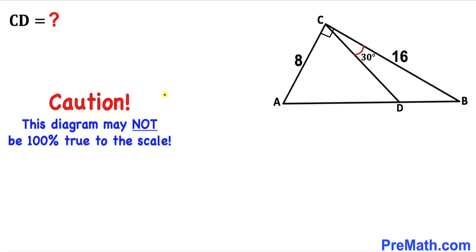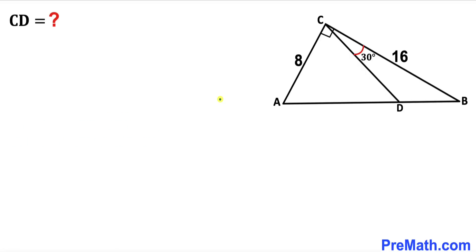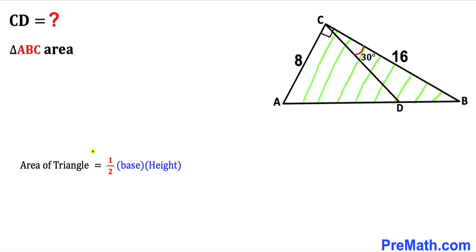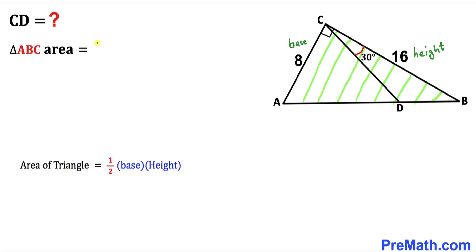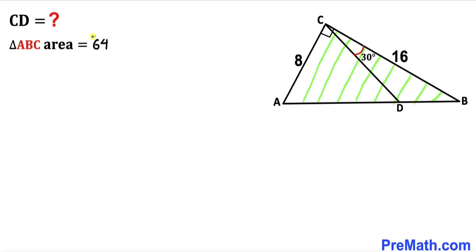Please keep in mind that this figure may not be 100% true to scale. Let's get started. We focus on triangle ABC and calculate its area using the formula: area equals one-half times base times height. Our base is 8 and height is 16, so the area of triangle ABC equals one-half times 8 times 16, which gives us 64 square units.